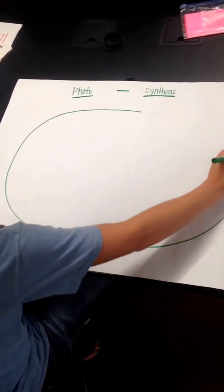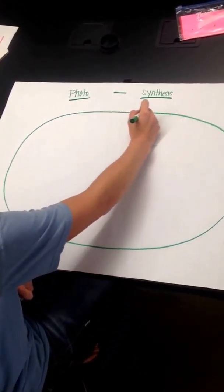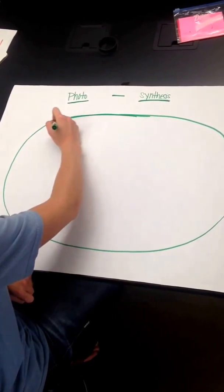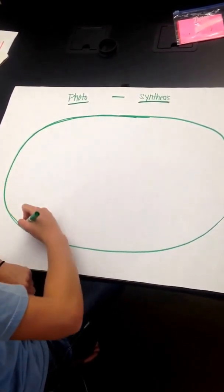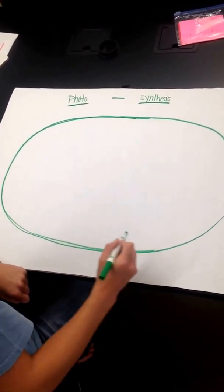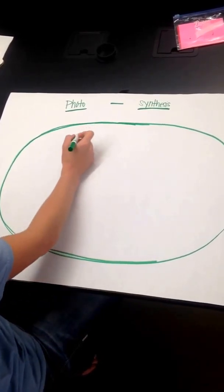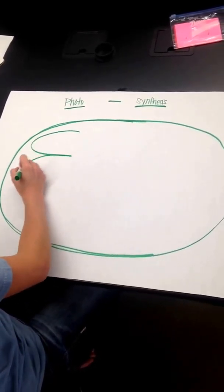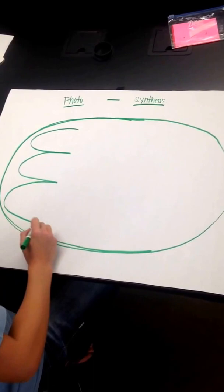Chloroplast is in plants and algae. Remember, it's got a double membrane. It's got its own ribosomes. Inside the chloroplast, there are thylakoids. And a stack of thylakoids are called a granum.